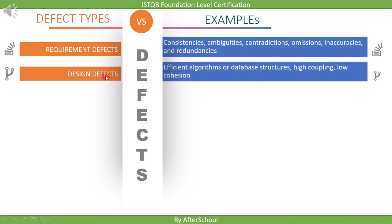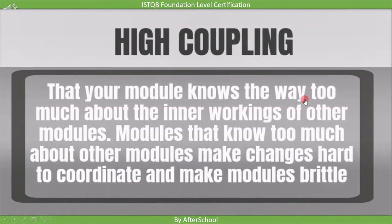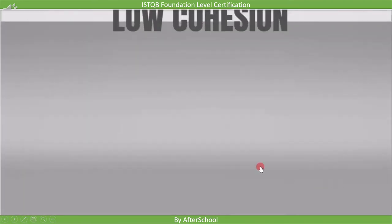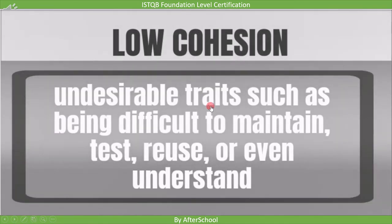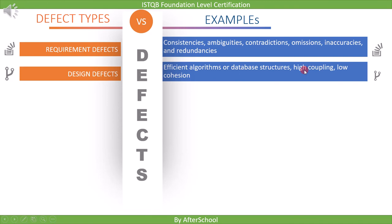The second defect type is design-related. For example: inefficient algorithms or database structures, high coupling, and low cohesion. High coupling means a module knows too much about the inner workings of other modules, making changes hard to coordinate. Low cohesion is associated with undesirable traits such as being difficult to maintain, test, reuse, or understand. These terms are related to static testing and represent design defects.